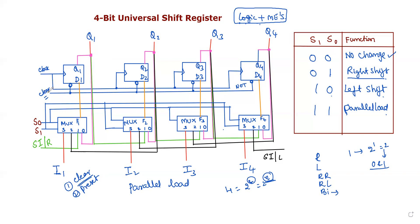The clear input is a single input, so there are two possibilities: zero and one. When the clear input is zero, it clears all the flip-flops to zero. This initializes the flip-flops to zero. Once we have cleared to zero, we can then perform the universal shift register function operations.